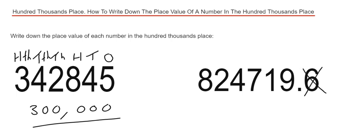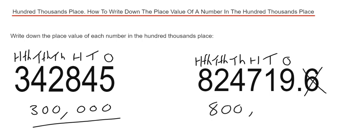We can ignore that six at the end. So we have nine in our ones, one in our tens, seven in our hundreds, four in our thousands, two in our tens of thousands, and we have eight in our hundreds of thousands. So this can be written down as eight hundred thousand. Thanks for watching guys, see you next time.